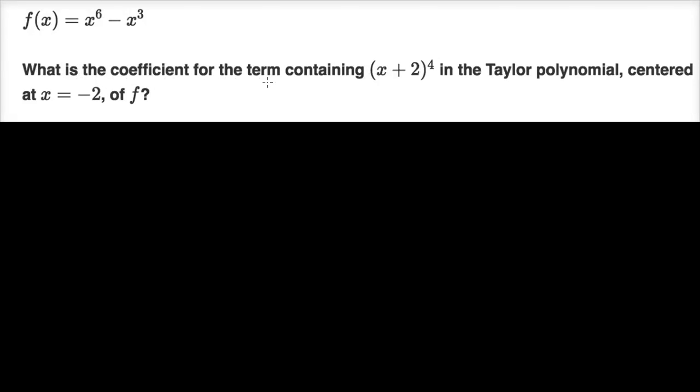We're given f of x, and they ask: what is the coefficient for the term containing (x+2) to the fourth power in the Taylor polynomial centered at x equals negative two of f? Like always, see if you can take a stab at this video on your own before we work through it together. All right, now let's do this.